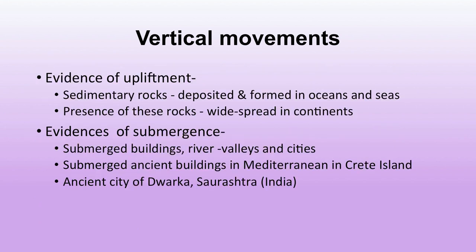There are two types of vertical movements: upliftment and subsidence. Evidence of upliftment includes sedimentary rocks deposited in oceans and seas now found widespread on continents. Evidence of submergence includes submerged buildings, rivers, valleys and cities. Examples are submerged ancient buildings in Mediterranean in Crete Island and the ancient city of Dwarka in Saurashtra, India.